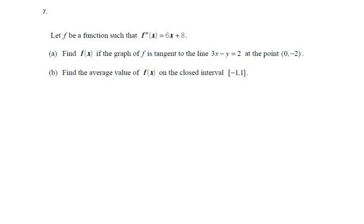In problem number seven we have f as a function such that the second derivative of f is 6x plus 8. We want to find f(x) if the graph of f is tangent to the line 3x minus y equals 2 at the point (0, -2).